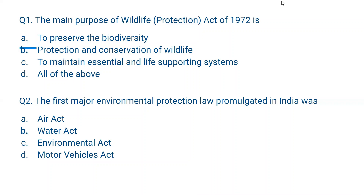Question number 2. The first environmental protection law promulgated in India was: A) Air Act, B) Water Act, C) Environmental Act, D) Motor Vehicles Act. Air Act means Air Prevention and Control of Pollution Act 1981; Water Act means Water Prevention and Control of Pollution Act 1974; Environmental Protection Act 1986; Motor Vehicles Act 1988. The first major act was the Water Act of 1974, so the correct answer is B.